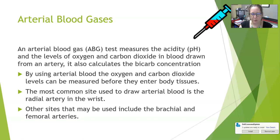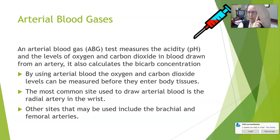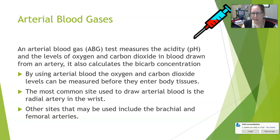The most common site used to draw arterial blood is the radial artery in the wrist. Other sites that can be used include the brachial artery in the upper arm and the femoral artery in the groin. The femoral artery is usually only accessed by a physician in most hospitals.